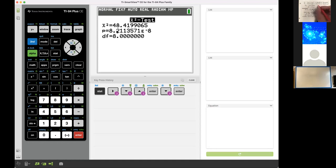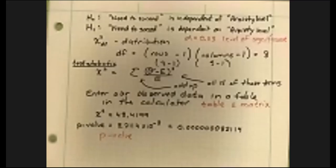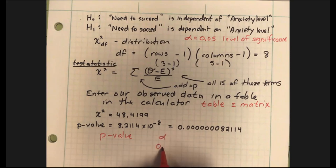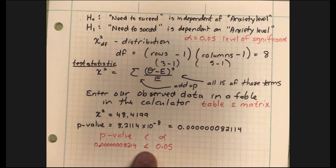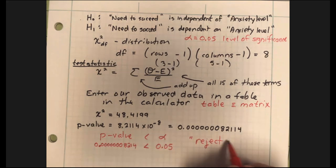What's my alpha level — my level of significance? Since they didn't give me one, I'll choose the ordinary five percent level of significance. Comparing this p-value to alpha: alpha is five percent, and this p-value is ridiculously tiny — 0.0000000082114. That p-value is way less than five percent. When the p-value is less than the level of significance, I reject the null hypothesis. There's no way these things seem independent.